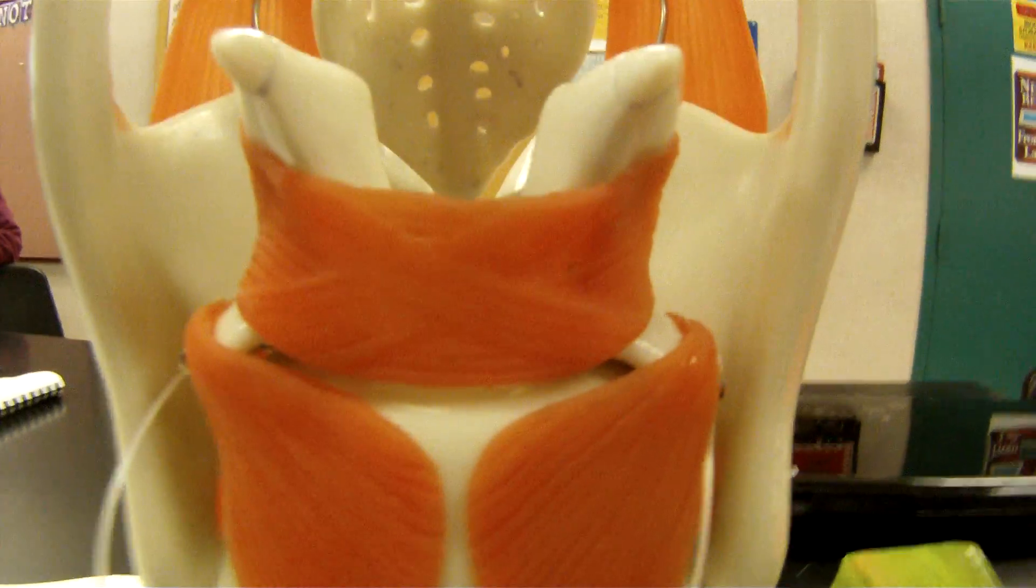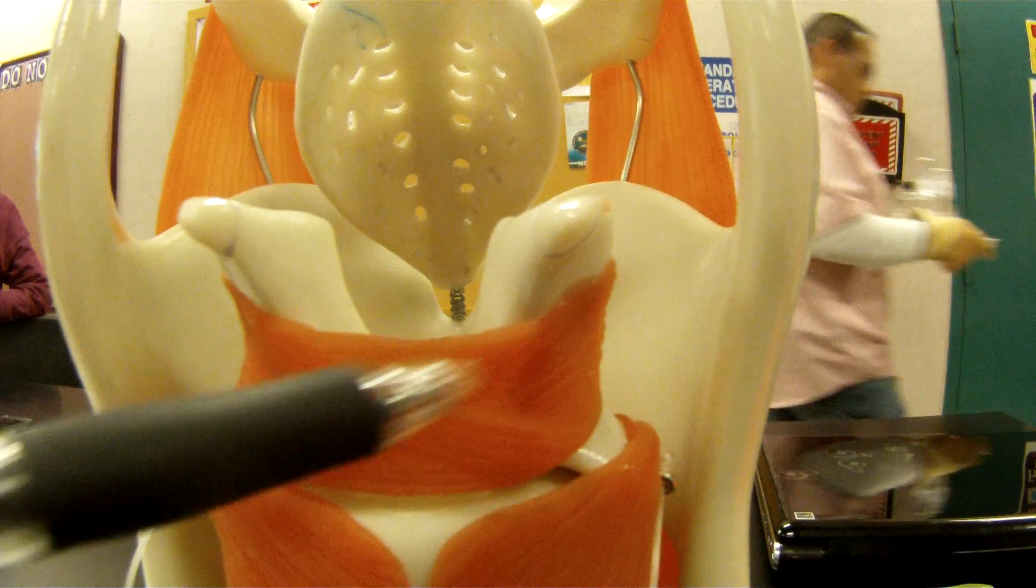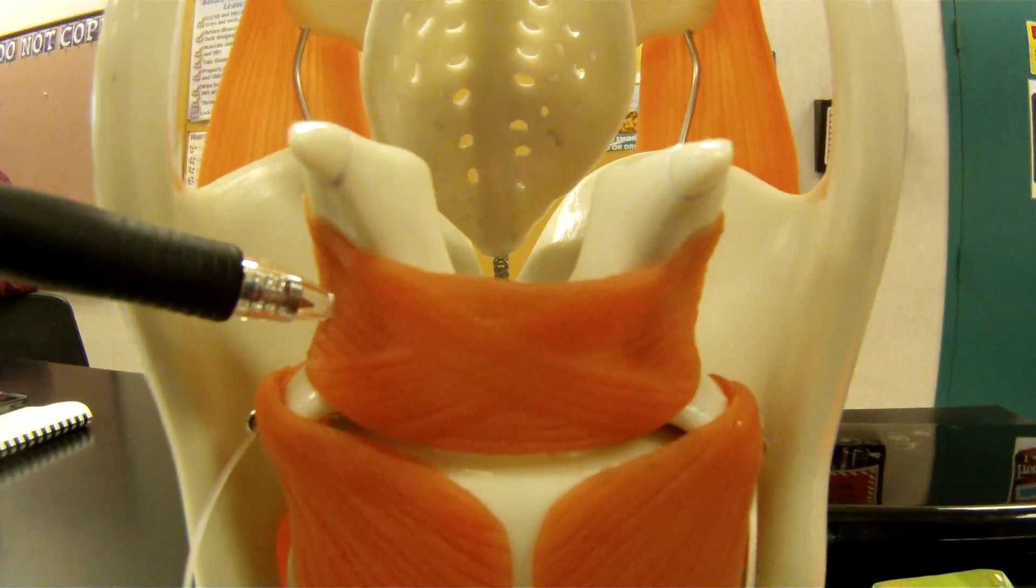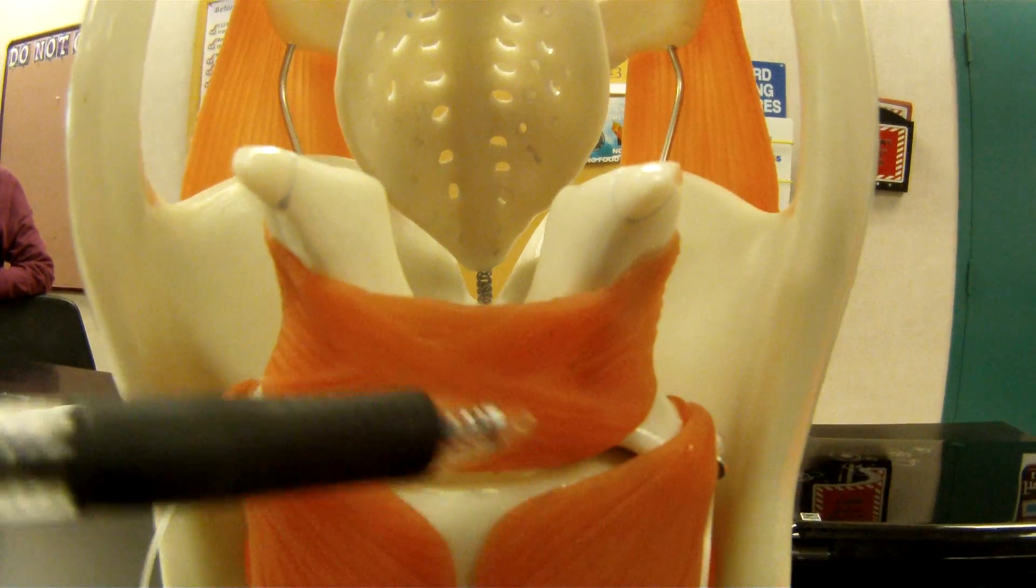There's two different muscles right here, which might be hard to discern on the video, but you have these two X-looking muscles. The muscle deep to that is your aretinoid cartilage muscle, and the more superficial, or the X that we're looking at now, is your oblique aretinoid cartilage muscle.